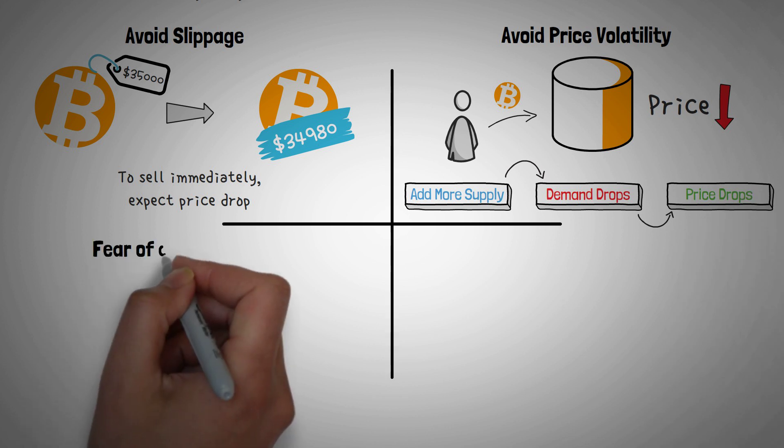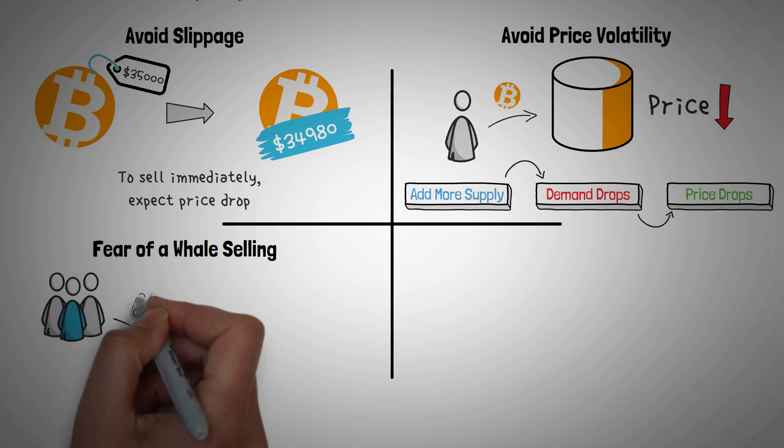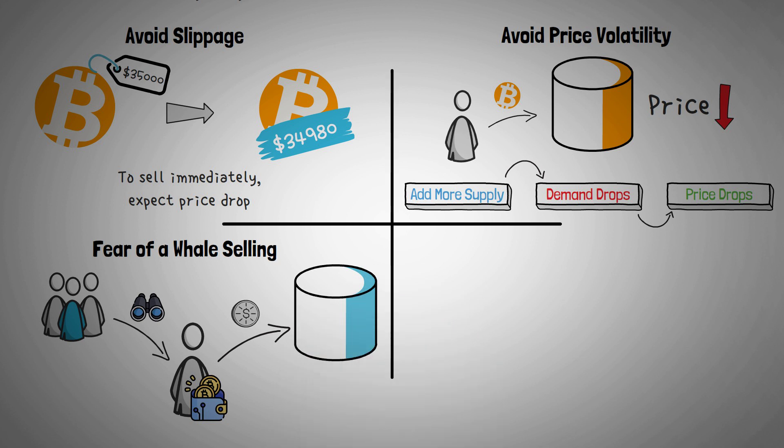Number three is to avoid the fear of a whale selling. Blockchains are really cool technology, but most of them are open for anyone's eyes to look at. This means any large wallet holder is constantly under the eye of professional traders. If they see a whale dumping their coins, they may get scared and think that the whales know something that they don't, and then this will cause them to follow suit and then eventually crash the price even more.